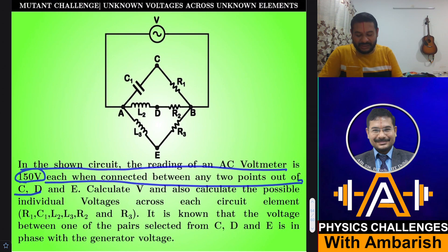In the shown circuit, the reading of AC voltmeter is 150 volt each when connected between any two points across C, D, and E. Whether you connect your voltmeter between C and D, or between D and E, or between C and E, in every case your reading is 150 volt.